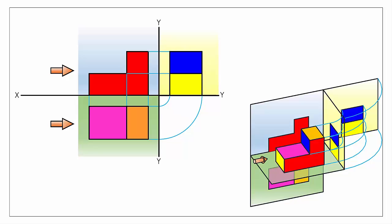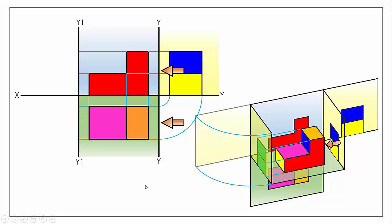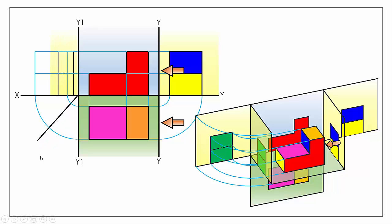The same process applies for our second end view, looking in from the far side. We have our direction, our plane, and we use the Y1Y1 line. We project in line with our line of sight onto the plane — both in elevation and in plan — and hinge back off our vertical plane. Note the hidden detail: we represent this line we can't see as a dashed hidden line. Using our arc and line continuations, there is our second end elevation. That gives us all four orthographic views of the object.